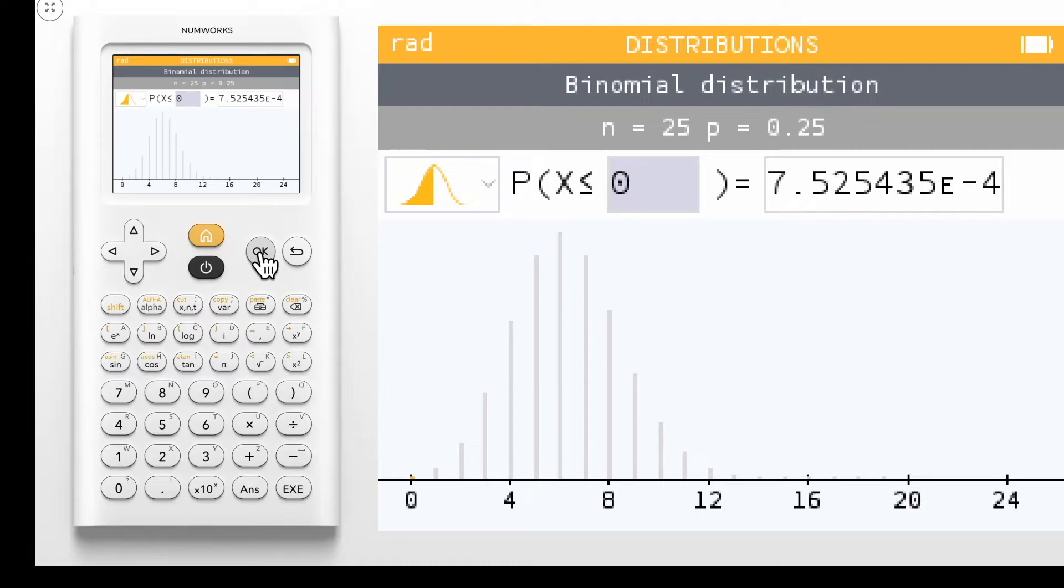Select Next. We now see a visual of our binomial distribution along with a probability statement at the top.